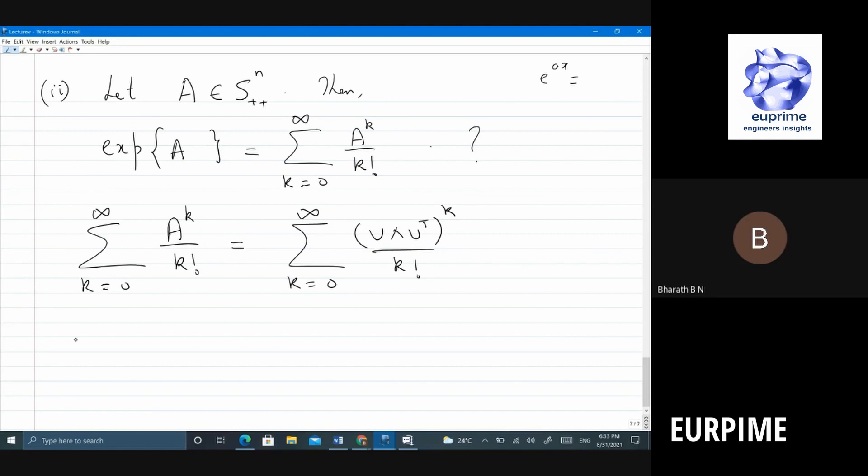Now you have this interesting quantity, U lambda U transpose whole power k. Let us see what do you mean by whole square instead of whole power k. So what is whole square? U lambda U transpose. What will happen? This U transpose and this U will cancel. What do you have? You have U lambda square. See, lambda is diagonal. When you multiply lambda 2 times you get lambda square, U transpose.